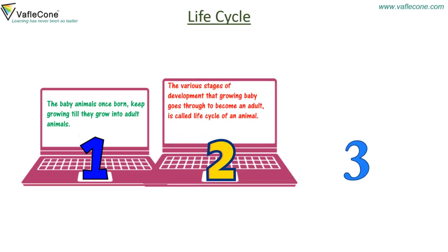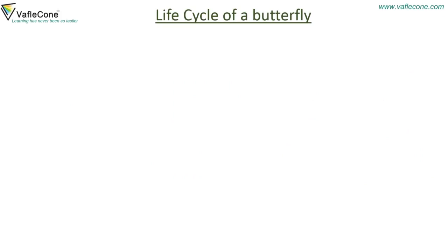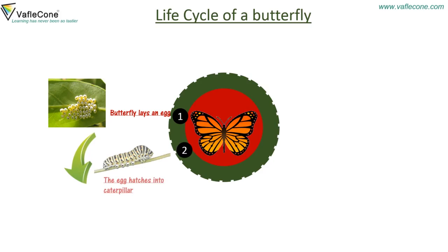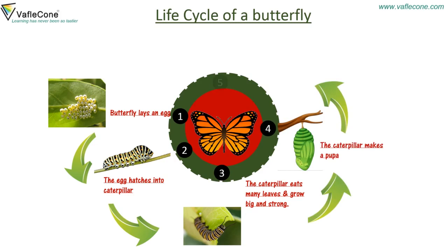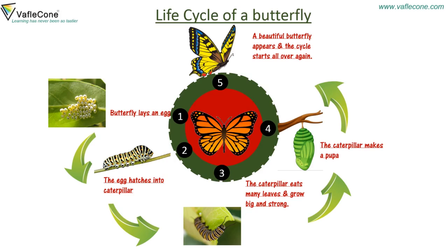Let's look at the life cycles of some more animals. Life cycle of a butterfly: the butterfly lays an egg, the egg hatches into a caterpillar, the caterpillar eats many leaves and grows big and strong, the caterpillar then makes a pupa, and a beautiful butterfly appears and the cycle starts all over again.